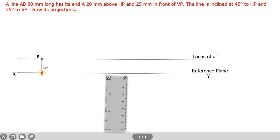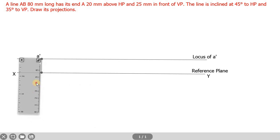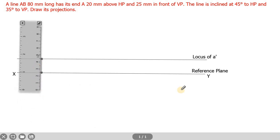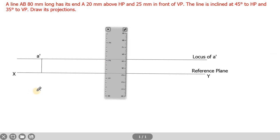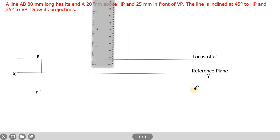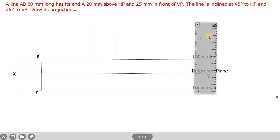In the question, point A is 25mm in front of VP. Being in front of VP is visible only in the top view, so the A point is marked below XY — that is, 25mm. Measure 25mm and put a point; this point is called A. Draw a horizontal line crossing through A — that is the locus of A. Then draw a vertical line from A up to XY.